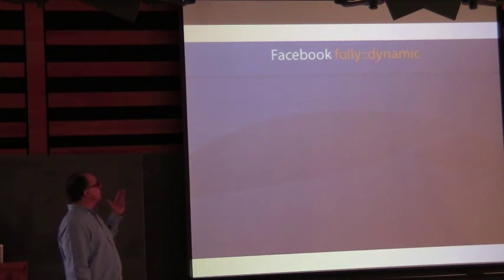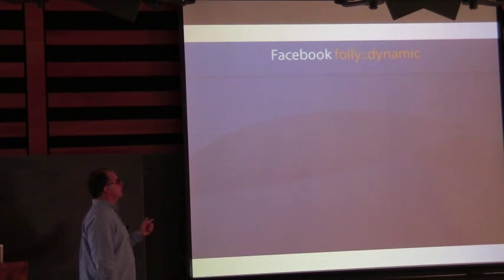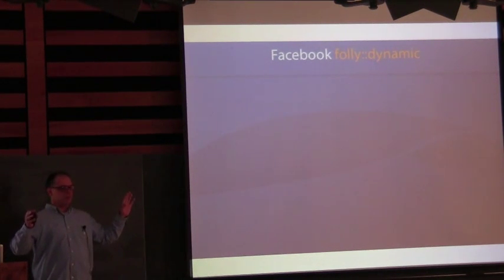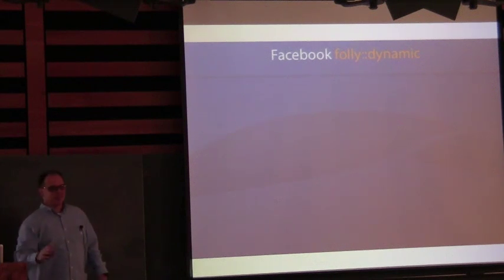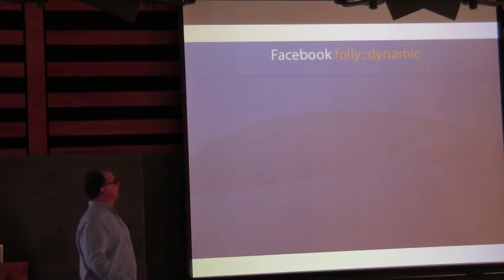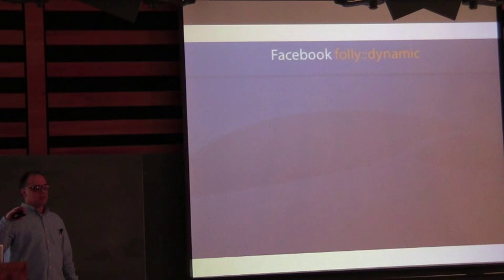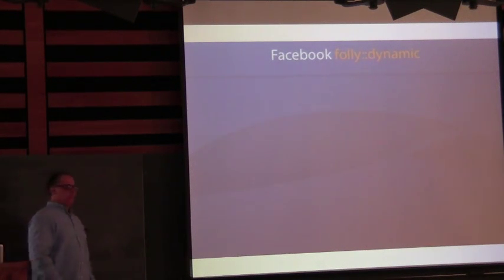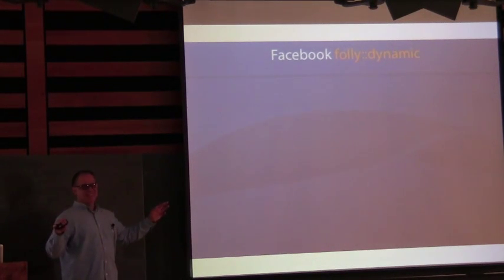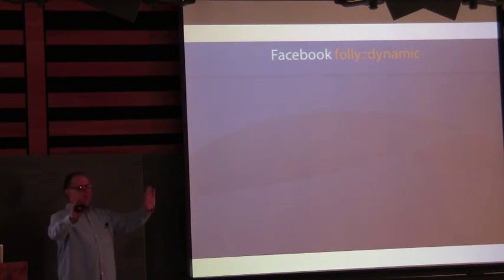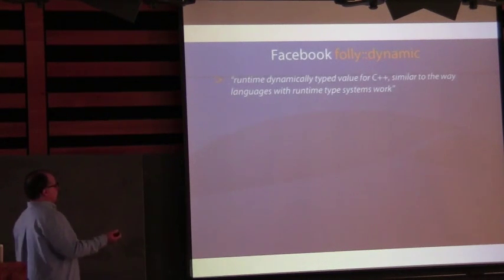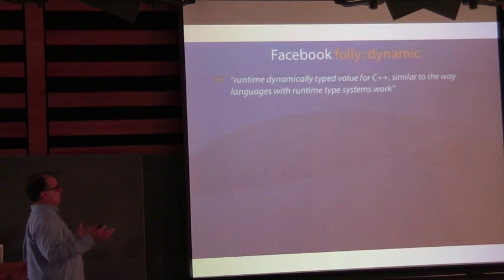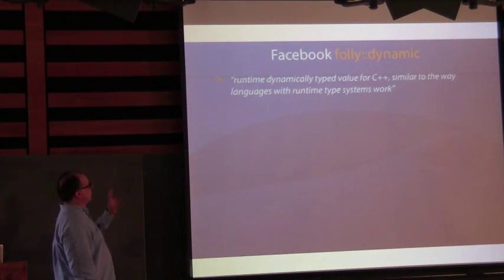Next is Facebook Folly Dynamic. Most people here are probably Boost users; fewer use POCO or Folly. Folly Dynamic is a runtime dynamic type value for C++, similar to the way languages with runtime type systems work. It holds types from a predefined set, won't hold anything arbitrary. There's a union of int, double, and similar types. It supports objects and arrays because JSON was their motivation, so it has dynamic object and array types. It's union-based — somewhat reminiscent of Boost.Variant.